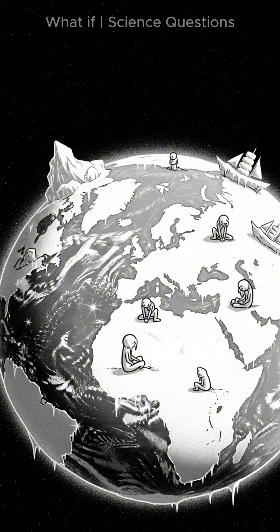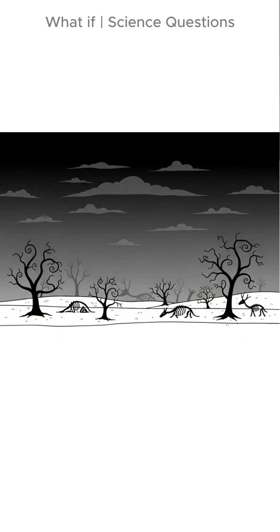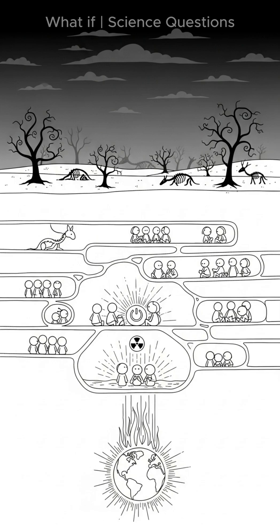Within a year, the oceans turn to ice. Plants die. Animals vanish. Humanity hides underground, clinging to heat from nuclear power and Earth's core.